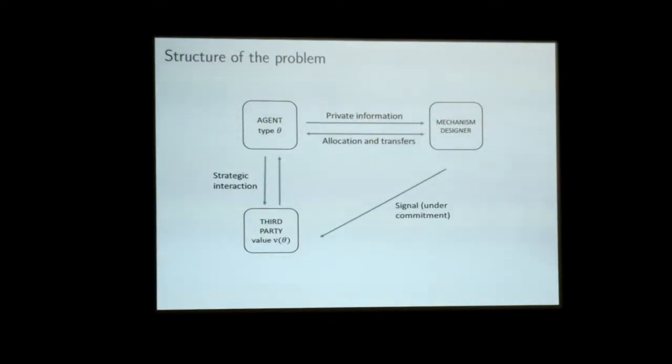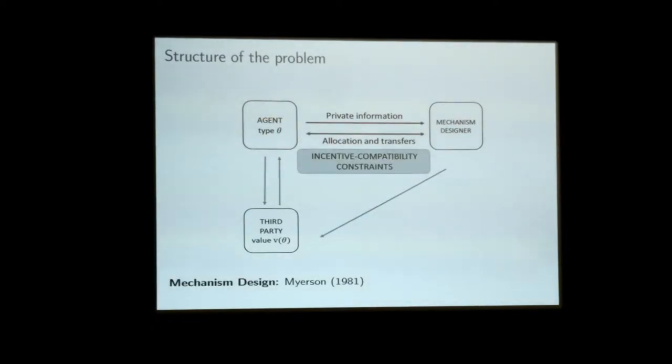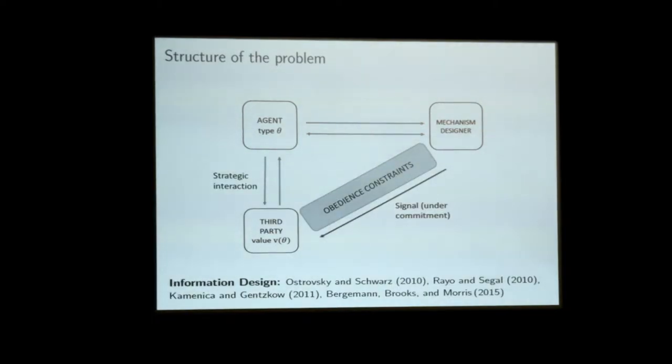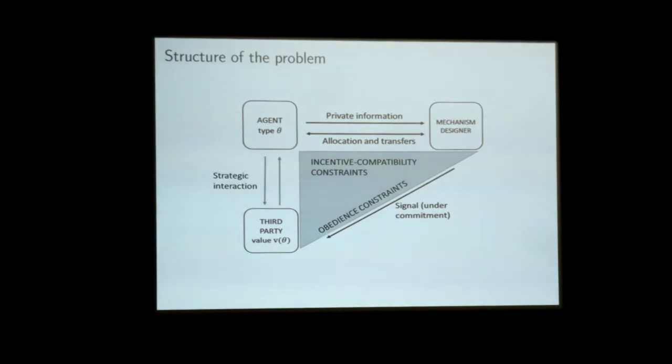Just a couple of points about the structure of this problem. If you forget about the aftermarket, that's just a standard Myerson-type problem, and we know how to solve this — you have incentive constraints and we know how to handle them. On the other hand, if you forget about the fact that the designer needs to elicit information from the agent and just assume the designer has this information, then this becomes an information design problem, where the designer reveals information about theta to the third party to induce the desired behavior in the aftermarket, subject to obedience constraints. The problem here is that I really need to design those two things jointly. There are complicated interactions between the incentive constraints and the obedience constraints. To put it bluntly, if you disclose too much information about the agent, the agent will not want to tell you the truth.